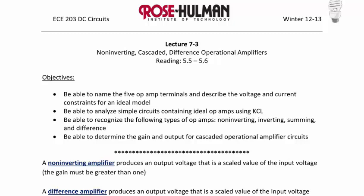The objectives are to be able to name the 5 op-amp terminals and describe the voltage and current constraints for an ideal model, be able to analyze simple circuits containing ideal op-amps using KCL, be able to recognize non-inverting, inverting, summing, and difference op-amp types, and be able to determine the gain and output of cascaded operational amplifier circuits.